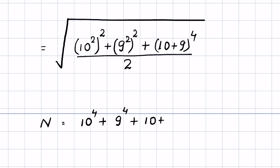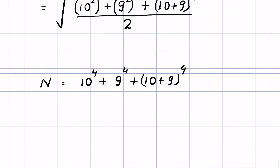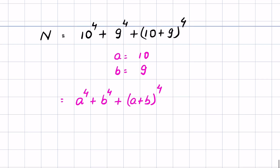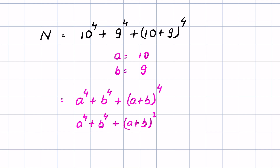Plus (10 plus 9) whole raised to the power 4. Now if we consider a equals 10 and b equals 9, then we have a raised to the power 4 plus b raised to the power 4 plus (a plus b) whole raised to the power 4. Now (a plus b) whole raised to the power 4 can be written as (a plus b) whole squared times (a plus b) whole squared.